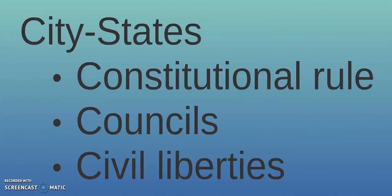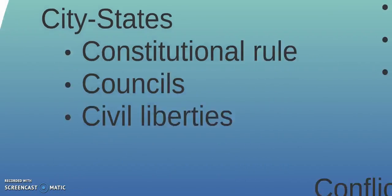In Italy, while elsewhere in Europe at this time you're starting to have some national sensibility — like in France, in England, and some other places — Italy was still a group of city-states who were all independent. They had some sort of constitutional rule and were ruled by some sort of council, not necessarily democratic, but at least a wide voice in the management of the city.